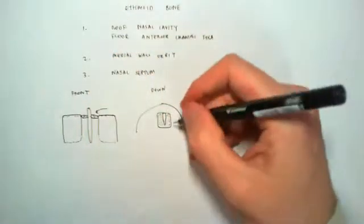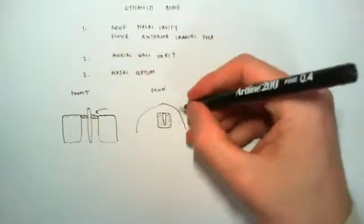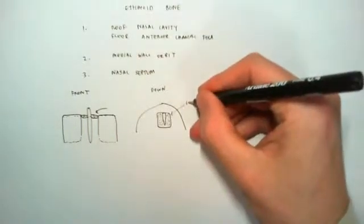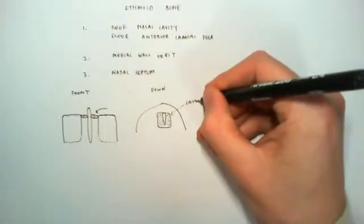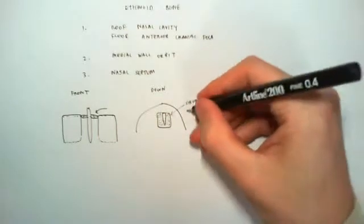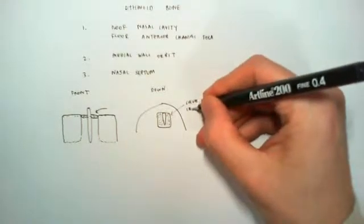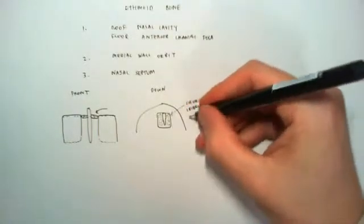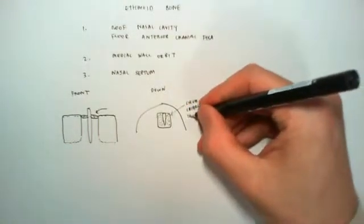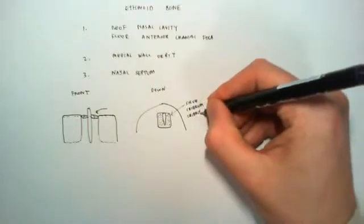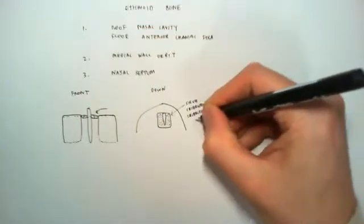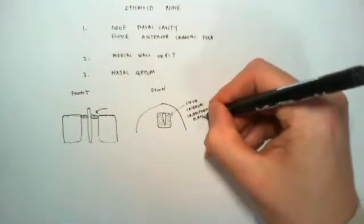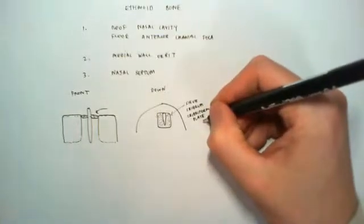And from above down, this section looks like a sieve. And because the Latin for sieve is cribrum, that's how this gets its name, as the cribriform, or sieve-like plate.